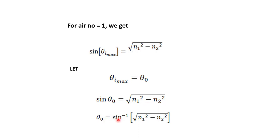Therefore, sin(theta naught) = √(N1² − N2²), and theta naught = sin⁻¹(√(N1² − N2²)). This theta naught is the acceptance angle. We can say that the acceptance angle is the maximum angle at which light enters the fiber and propagates down the fiber by following the law of total internal reflection.